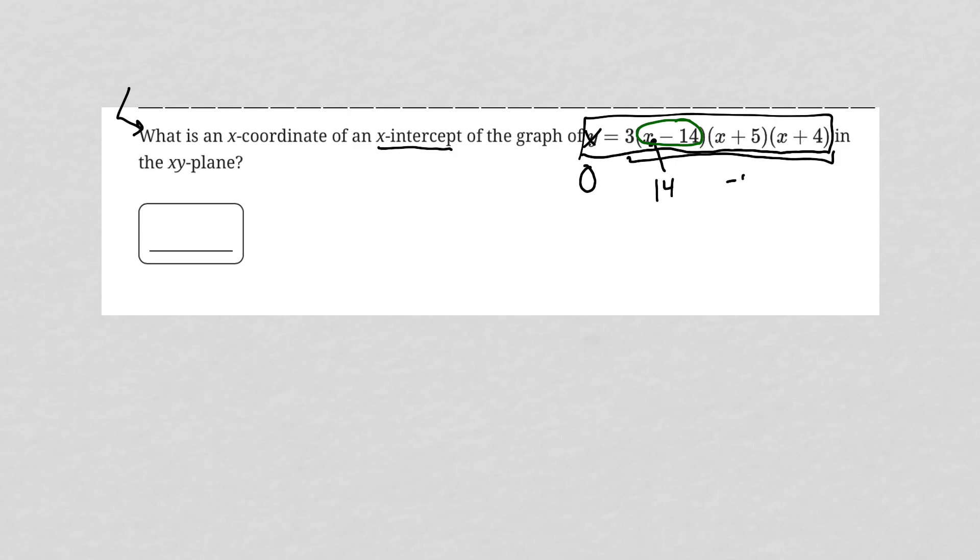Also, x could be negative 5 for the exact same reasons. If x were negative 5, it makes this parentheses equal to 0, which would make the entire equation equal to 0.